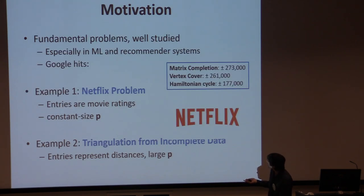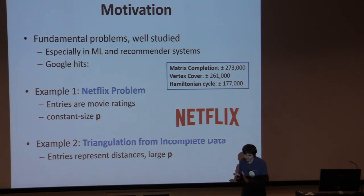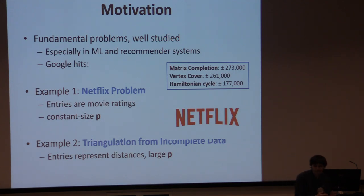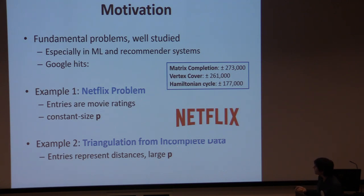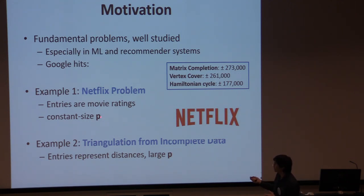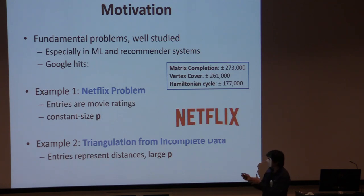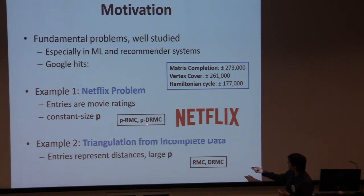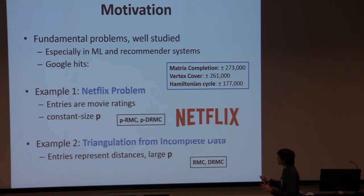We looked at the complexity of these things. These problems are quite well studied in other fields — there are connections to the Netflix problem, triangulation from incomplete data, and so forth. In some settings, the domain size is bounded by some constant; in other settings, numbers could be large. We looked at both cases: rank matrix completion and distinct row matrix completion either with a fixed P, meaning P is fixed, or the standard version where P is part of the input. So we have four problems here.